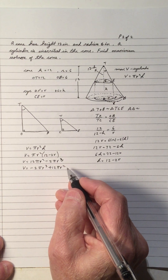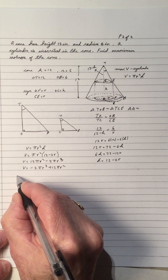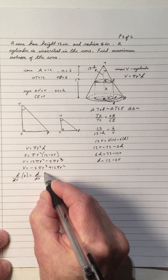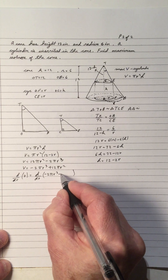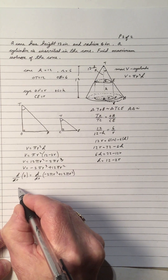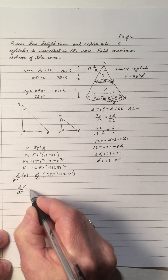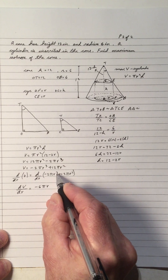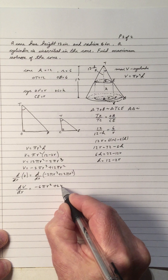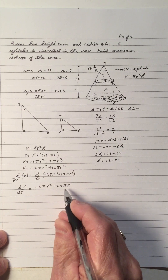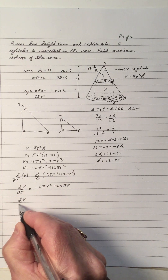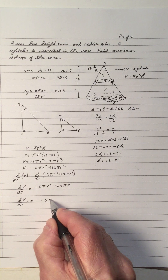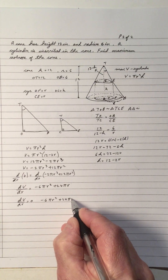To get the maximum value I need to take the derivative. So dV/dR of the volume: the derivative of negative 2 pi R cubed is negative 6 pi R squared, and the derivative of 12 pi R squared is 24 pi R. To find the maximum, we set the derivative equal to zero, giving negative 6 pi R squared plus 24 pi R equals 0.